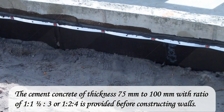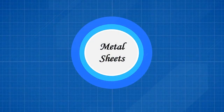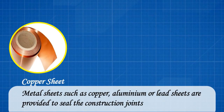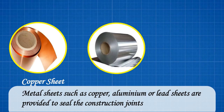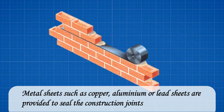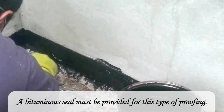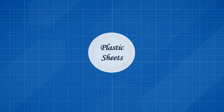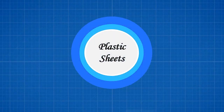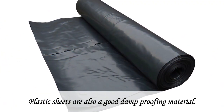Metal sheets such as copper, aluminium, or lead sheets are provided to seal the construction joints. A bituminous seal must be provided for this type of damp proofing.